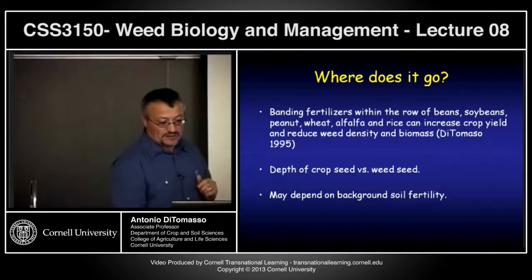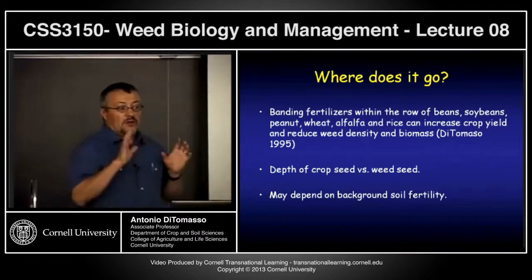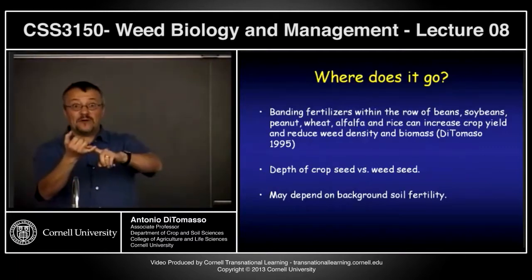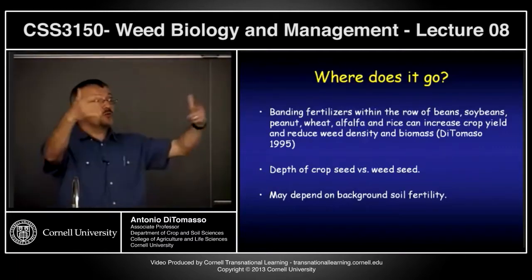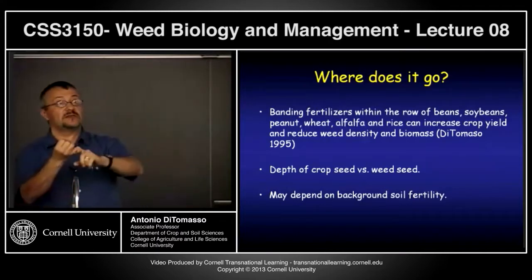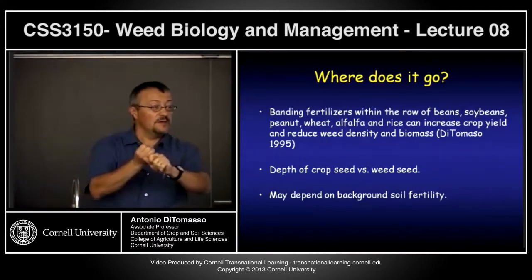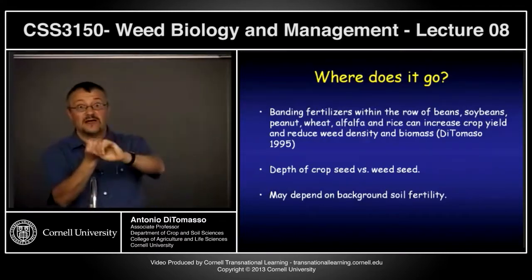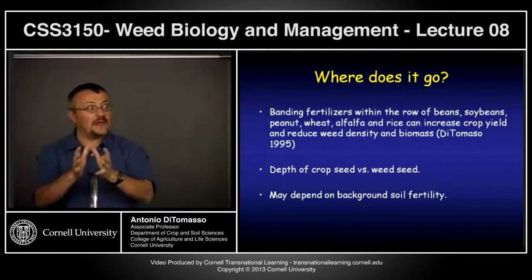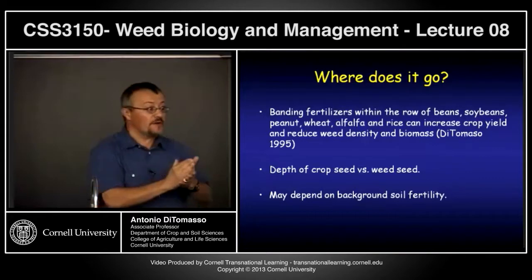What's also important — so it's not only the type of nutrient, but also the timing — is where spatially you put that nutrient or nitrogen. That's going to be important. There's a study by Di Tomasso, my colleague and co-author of Weeds of the Northeast, published in Weed Science in 1995, looking at strategies of fertilization to increase crop production.